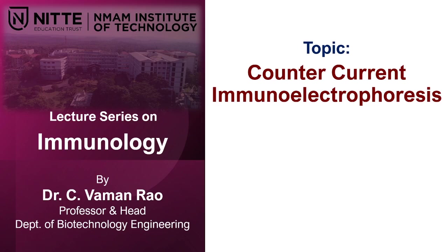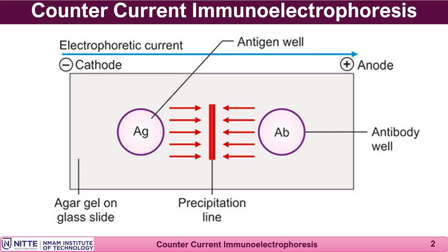Counter current immunoelectrophoresis is another type of precipitin reaction demonstrated using antigen and antibodies. They are made to move in an inert material — agarose gel — in the presence of electricity using an electrophoretic apparatus. It is called counter current because the antigen and the antibody move towards each other in the presence of an electric field and meet at a particular point to give a precipitin band.